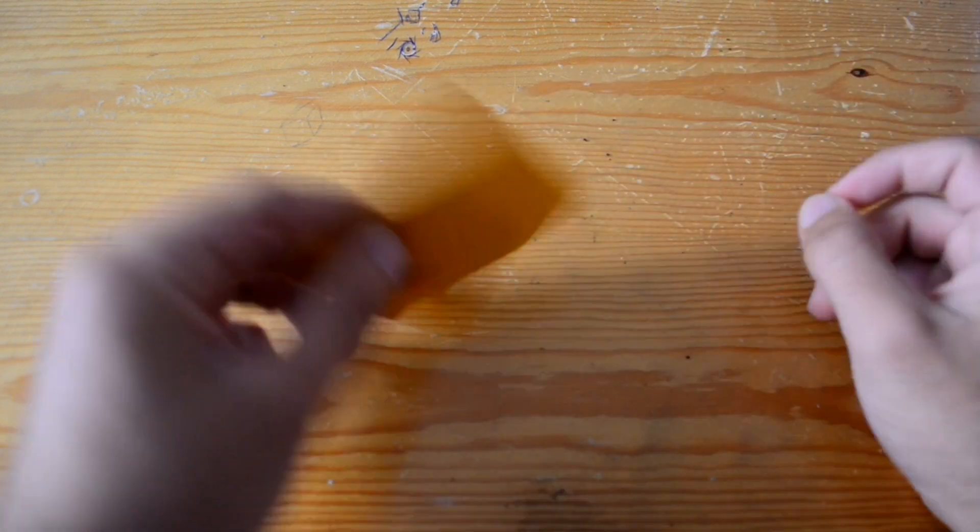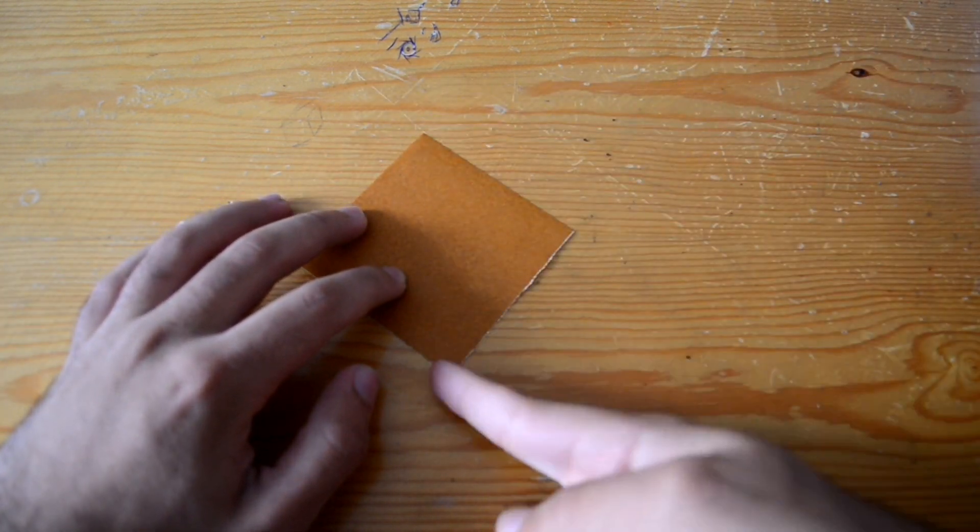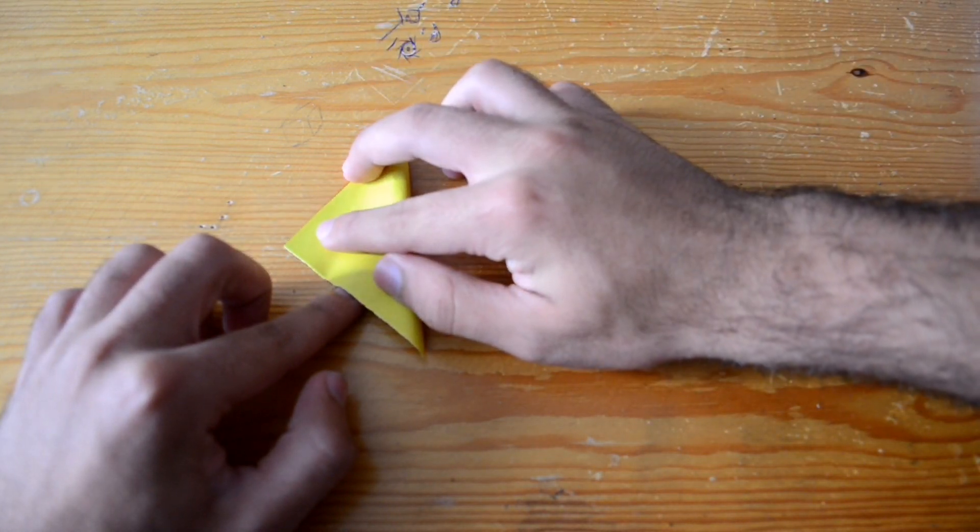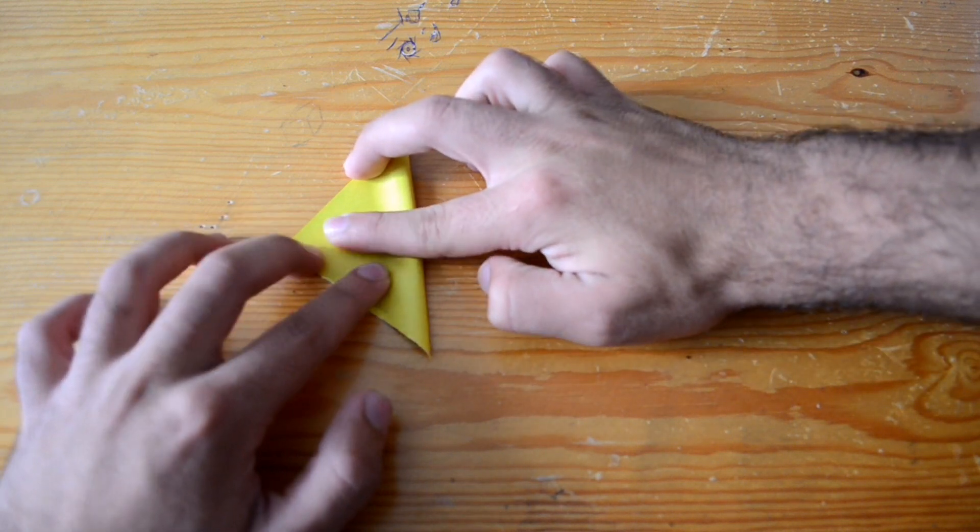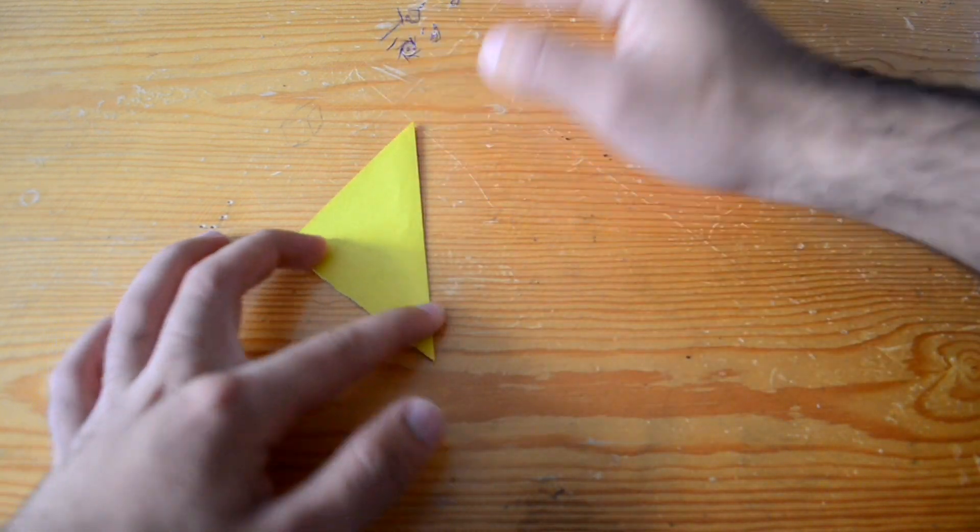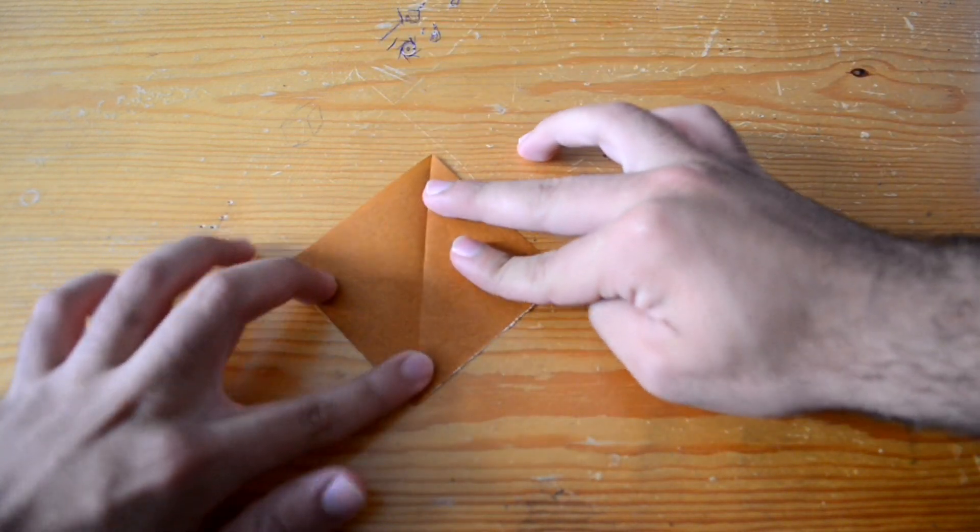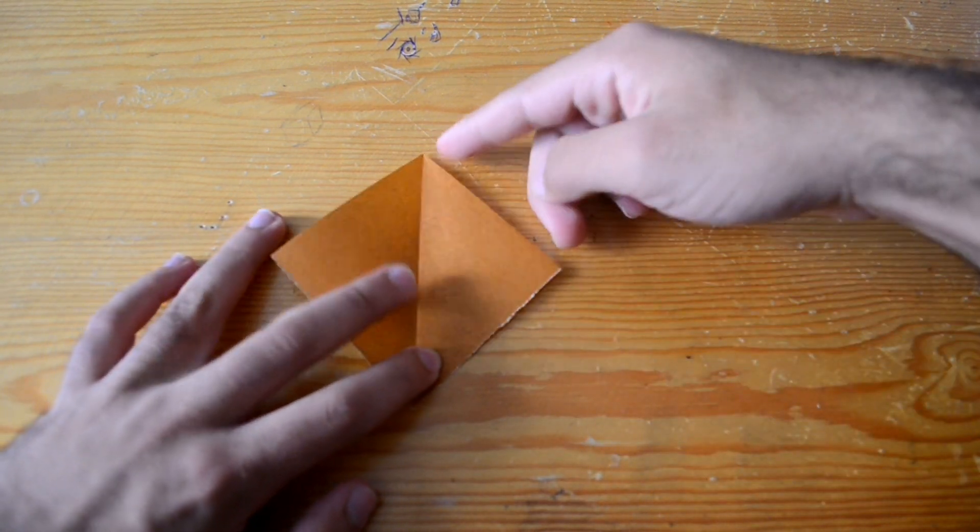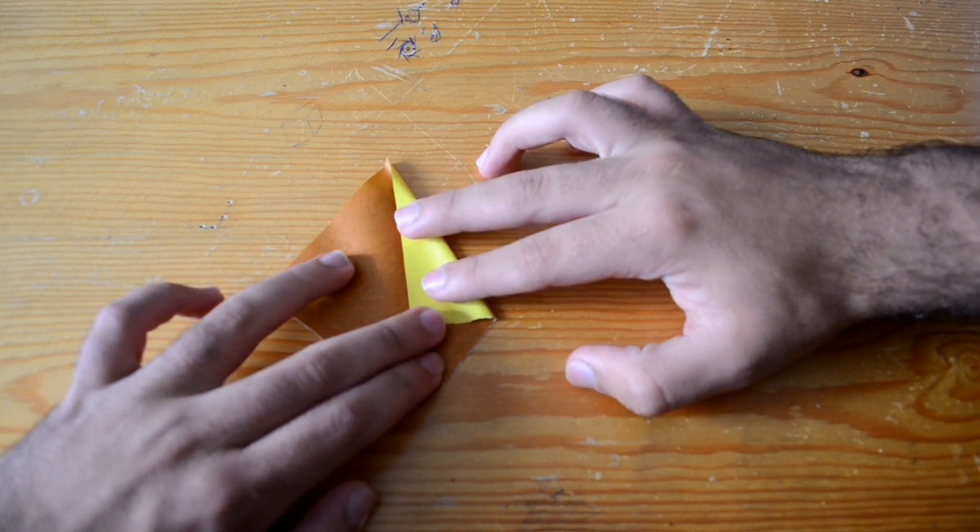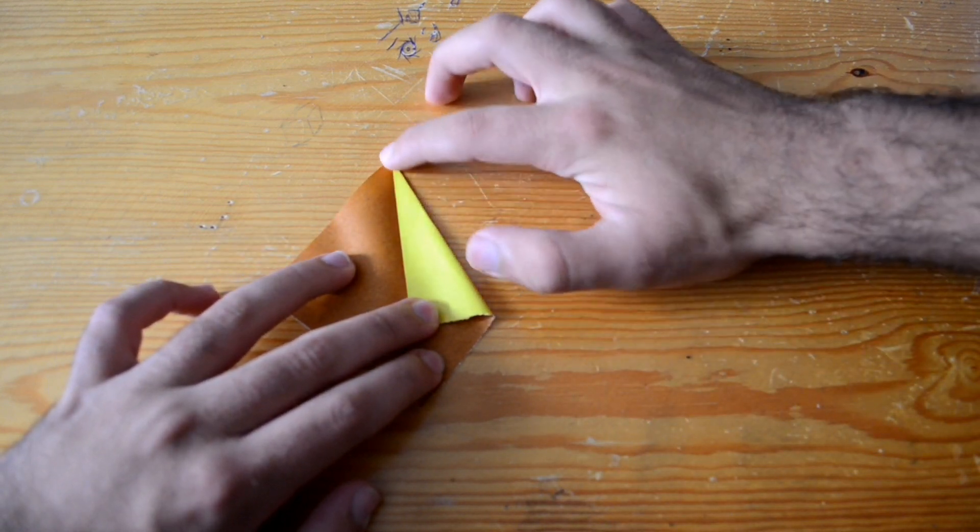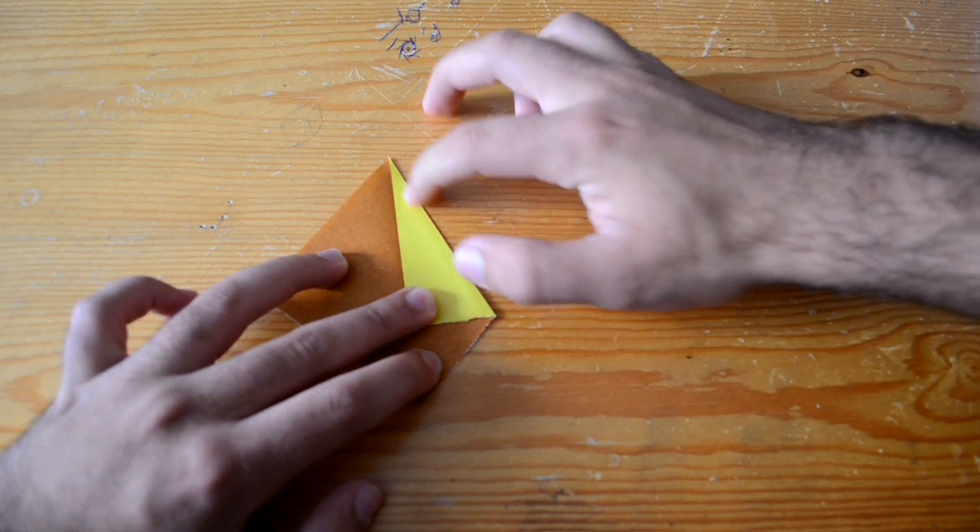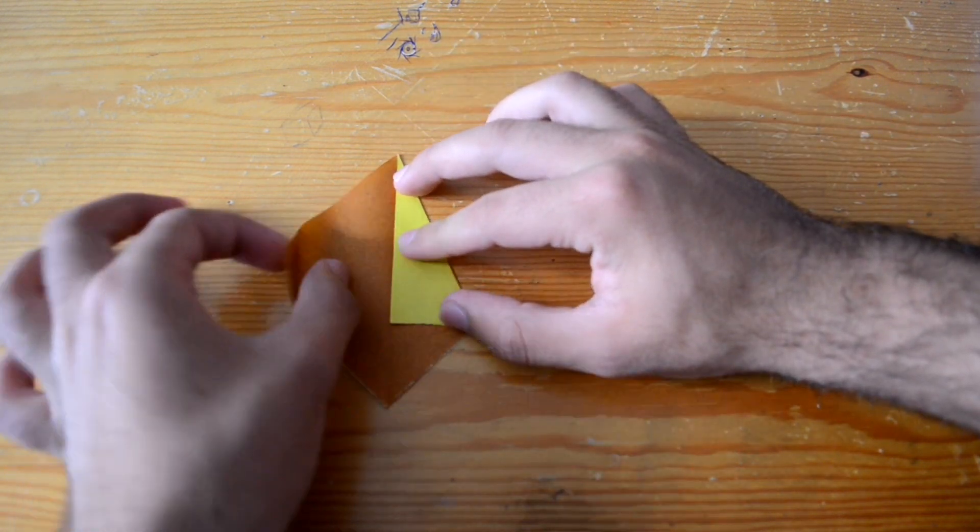So first, I'm gonna fold on this line here, like this, then unfold the paper. Then fold this line and this one over the center line, like this, then this one here.